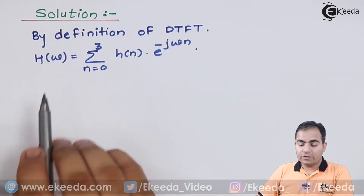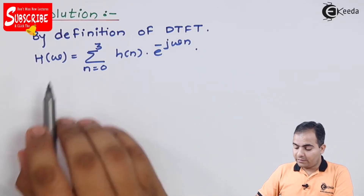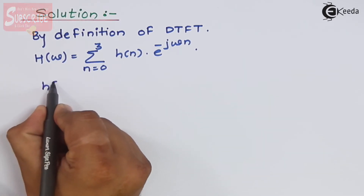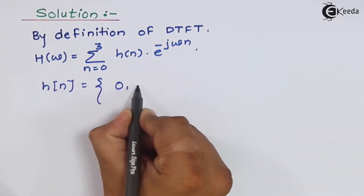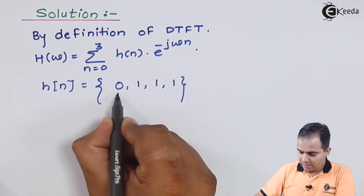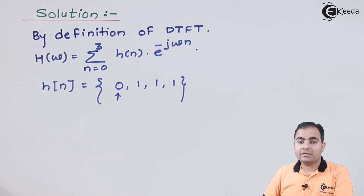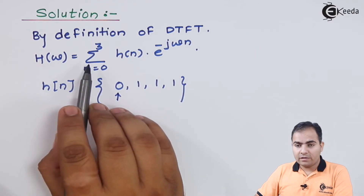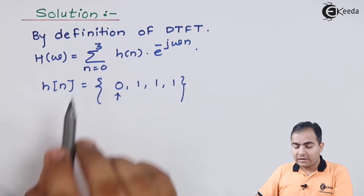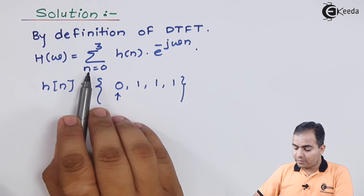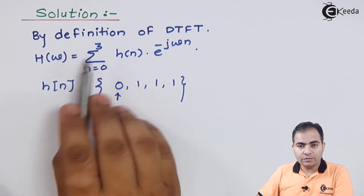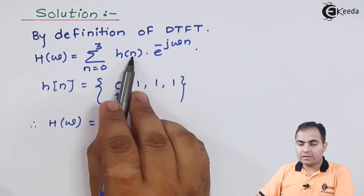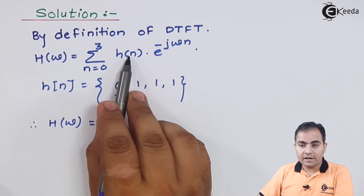This is the definition of DTFT. We have only 4 samples and the first element, which I assumed as the origin value, corresponds to n = 0. I will break this summation and substitute my n values from 0 to 3.